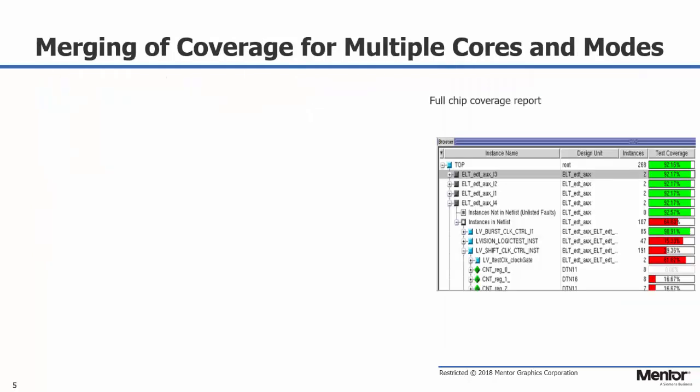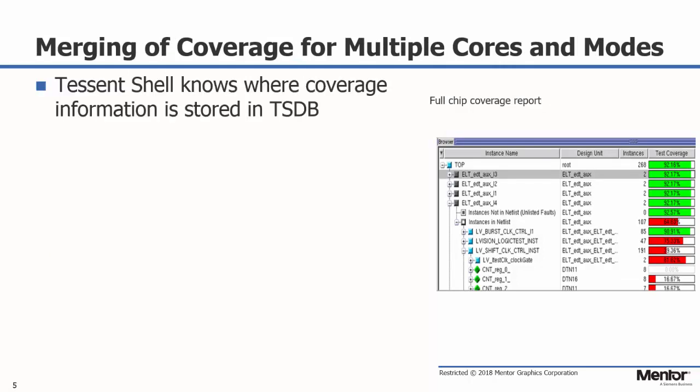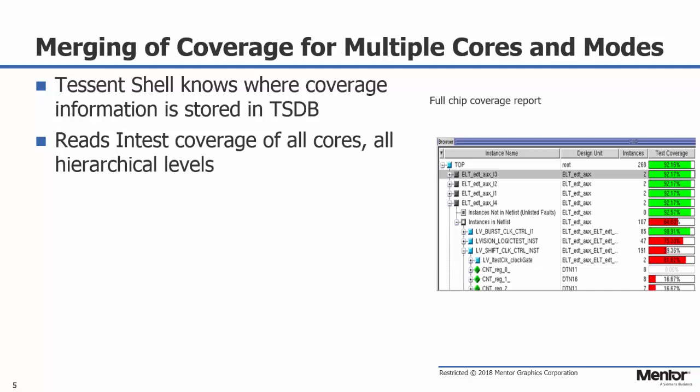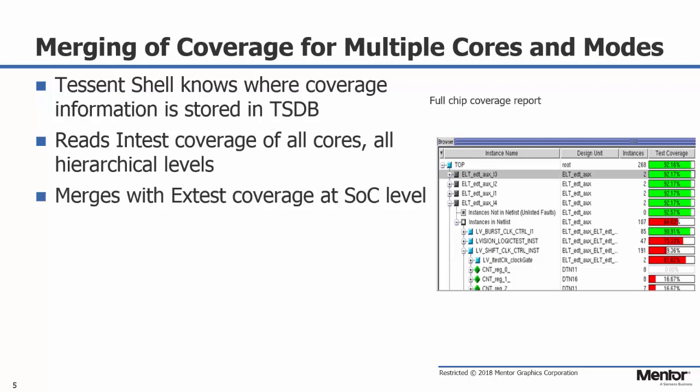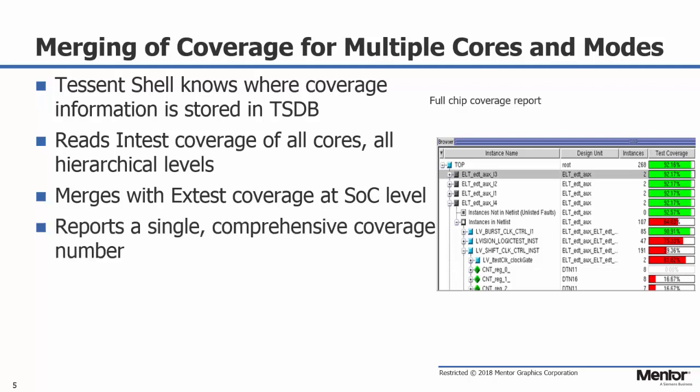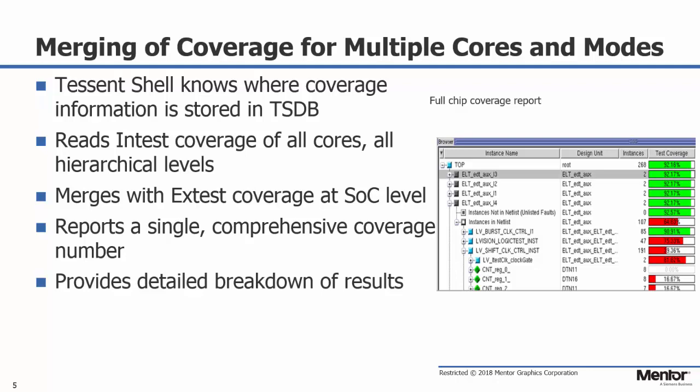When it comes to merging the results of multiple cores and test modes at the SoC level, Tessin knows where all the coverage information is stored because it's all organized in the TSDB. It reads in test mode coverage of all the cores and all potential hierarchical levels within those cores, then merges those coverage numbers with the results of the external test mode at the SoC level — resulting in a single comprehensive number representing testing of all separate cores and modes, with a detailed breakdown based on fault categories and hierarchical levels. For a more detailed demonstration of this SoC-level fault merging sequence, please view part three of this video series, where I will take a sample design and show the steps used to read all the fault results from the TSDB and merge them together.